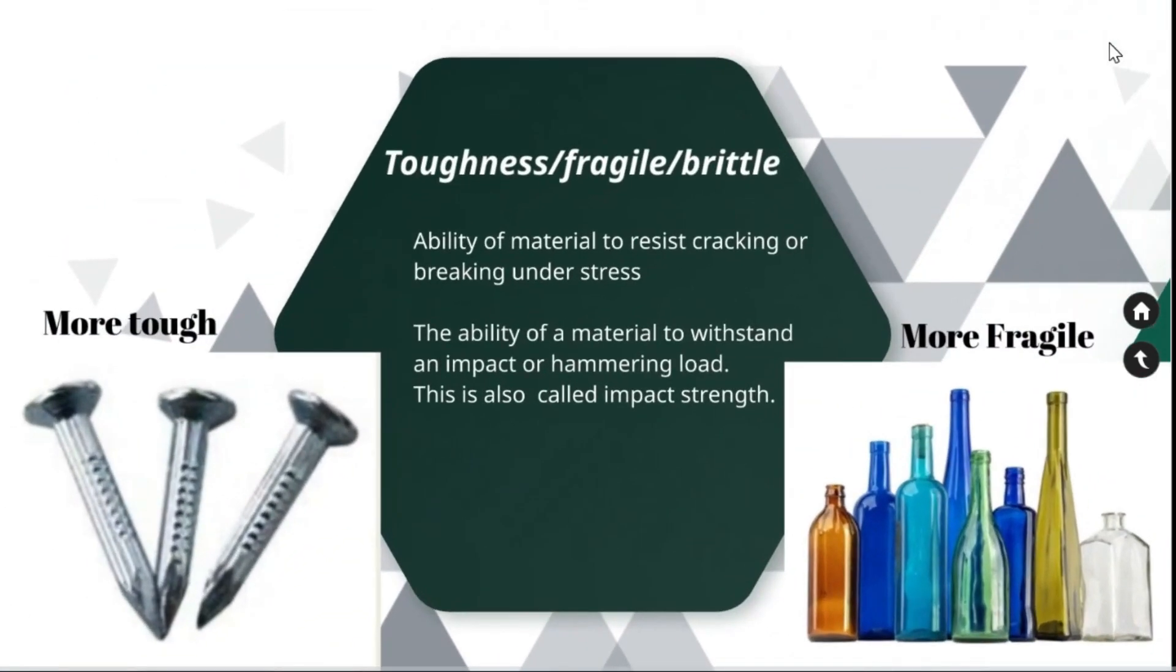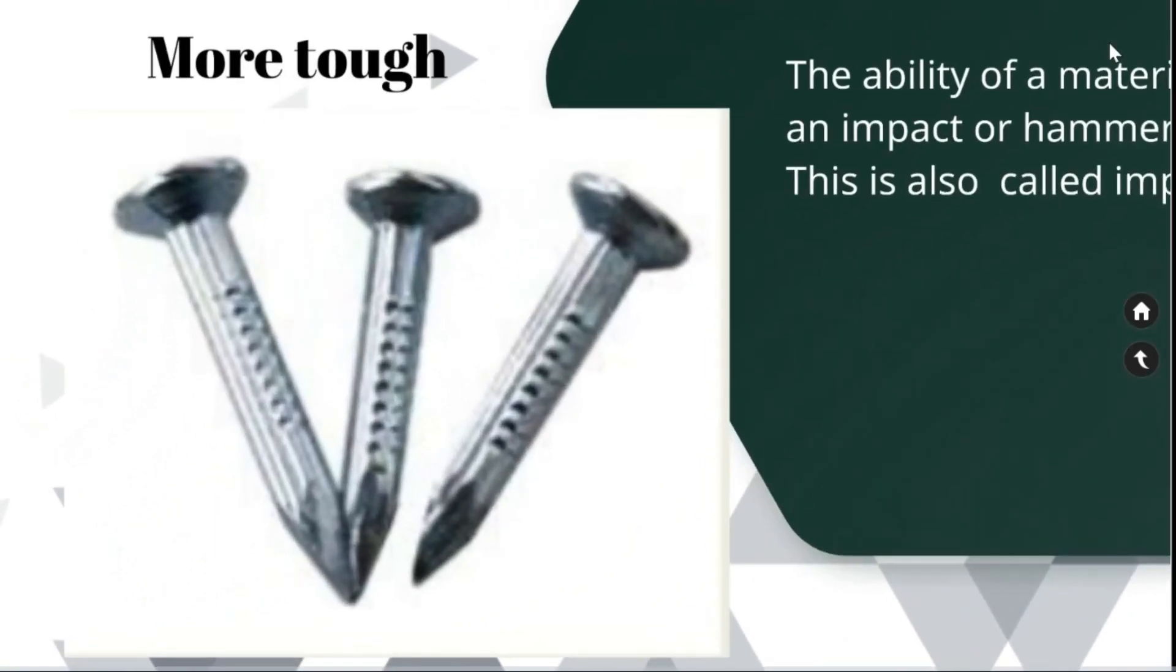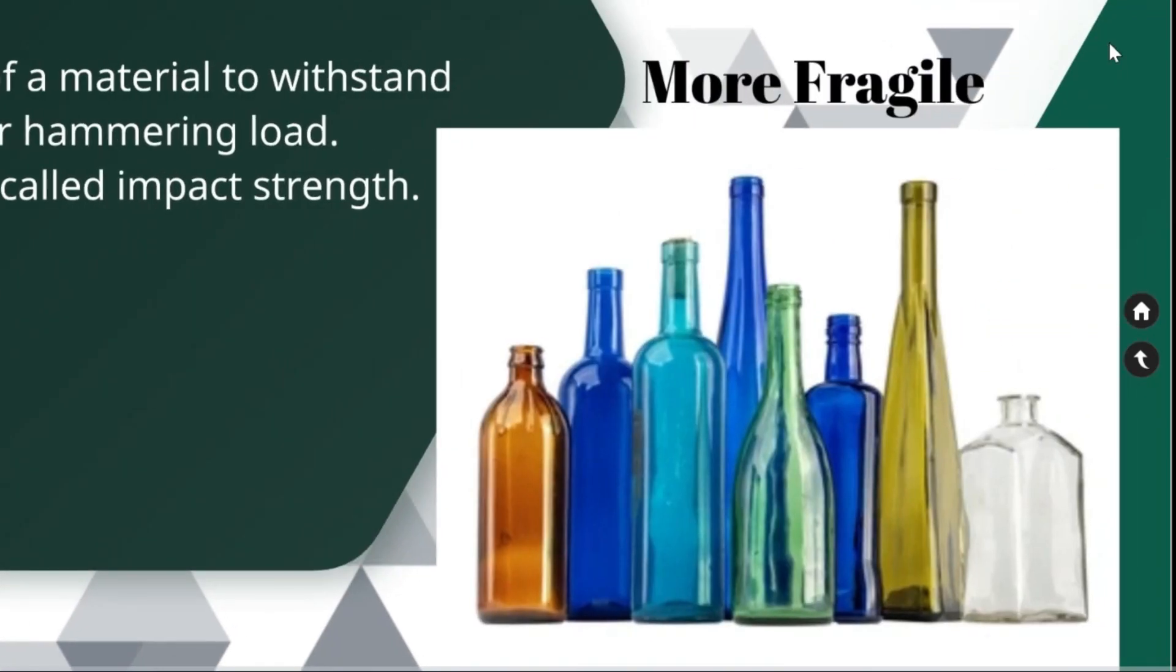Toughness is the ability of a material to withstand a sudden impact or a hammering load. So, this is also called impact strength. Here is the example of more tough and more fragile products.